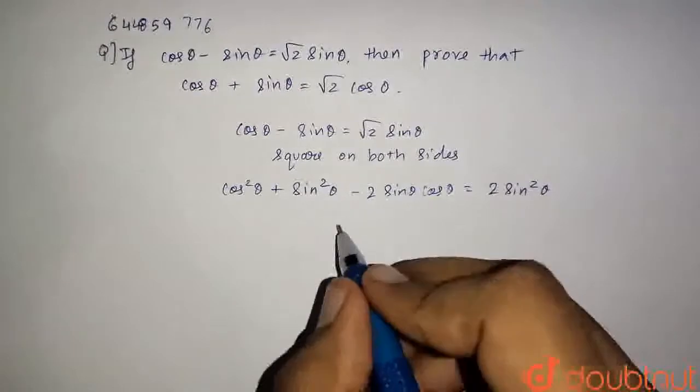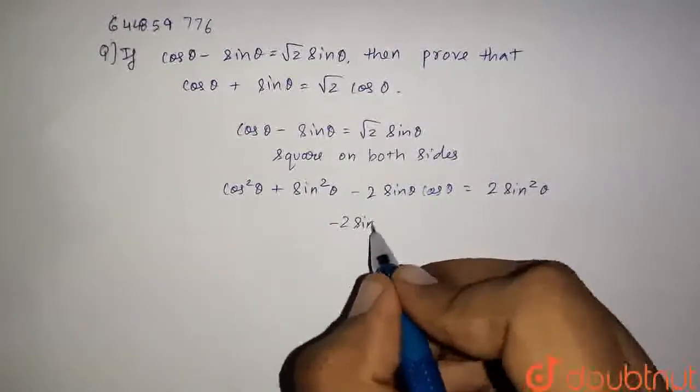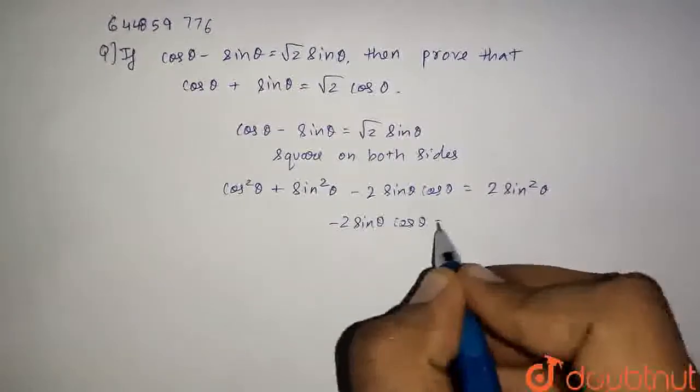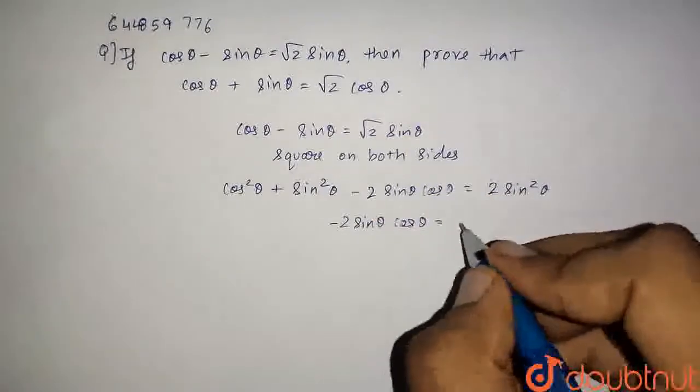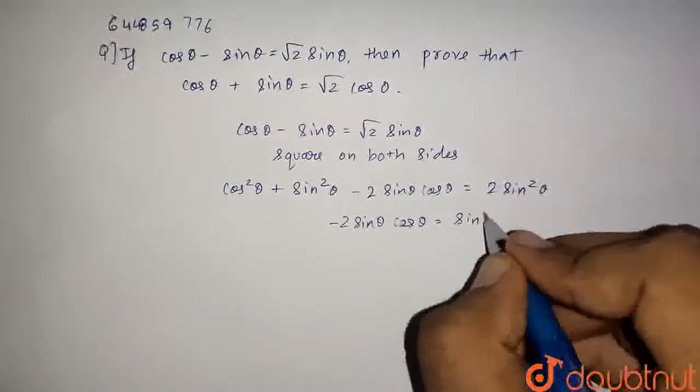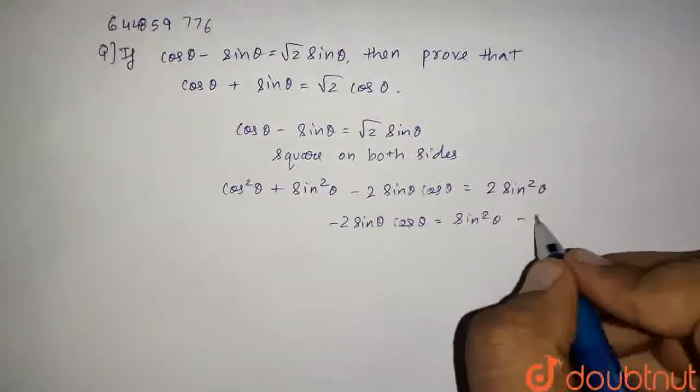Now, we will take the terms on the right hand side, so we will get minus 2 sin θ cos θ is equal to 2 sin²θ minus sin²θ will be sin²θ and minus cos²θ.